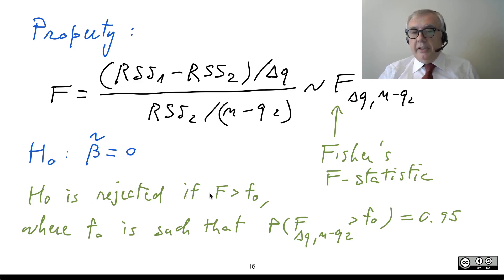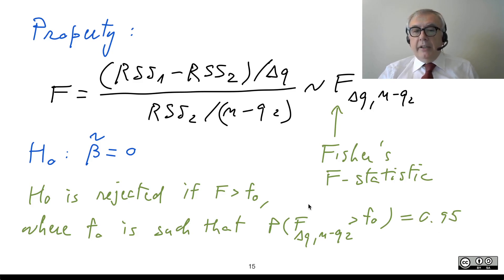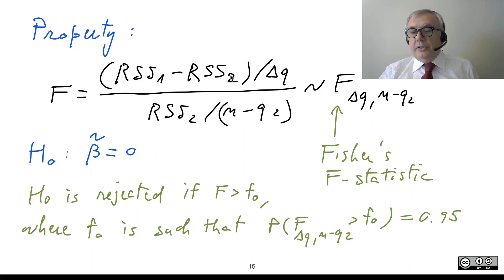F0 is a value such that the probability that the Fisher's F random variable with delta-Q and N minus Q2 degrees of freedom exceeds F0 is 0.05. Capital F is large when RSS2 is much smaller than RSS1, which is reasonable because if you are introducing useful parameters, the residual sum of squares decreases substantially. In this case, you have good reasons to reject the simple model in favor of the more complex one.